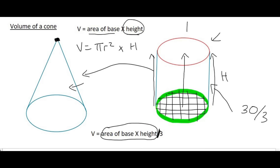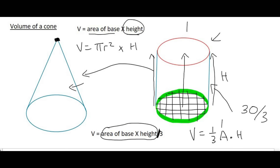In class, your teacher might write it as: volume is equal to one third A times H. The A is the area of the base, the H is the height, and the one third is the same as dividing by 3. In summary, a cone and a cylinder almost have the same volume formula — it's just that the cone's volume will be one third of the cylinder. So you pretend it's a cylinder, and then just divide your answer by 3.